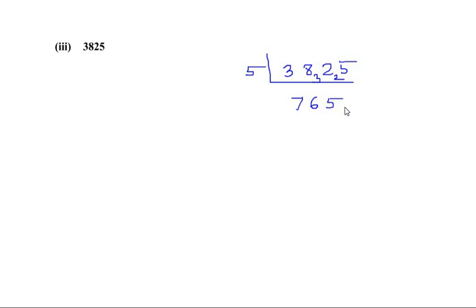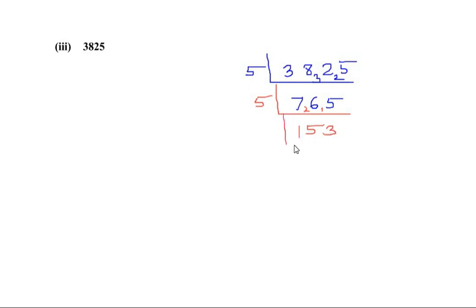Now 765 also ends with 5, so it is again divisible by 5. 5 times 153 gives us 765. Now 153 ends with 3, so let us try if it goes in the table of 3. 3 times 51 gives us 153, so it is divisible by 3.